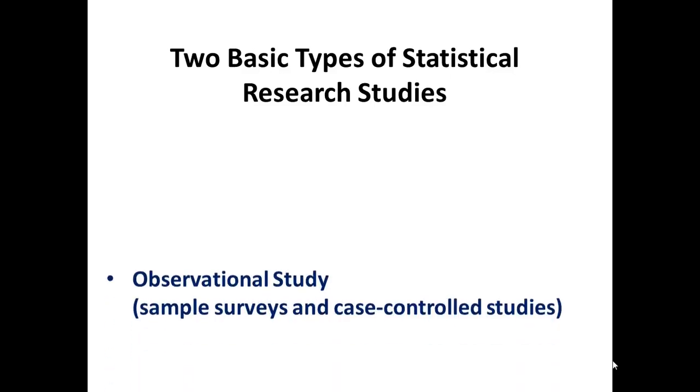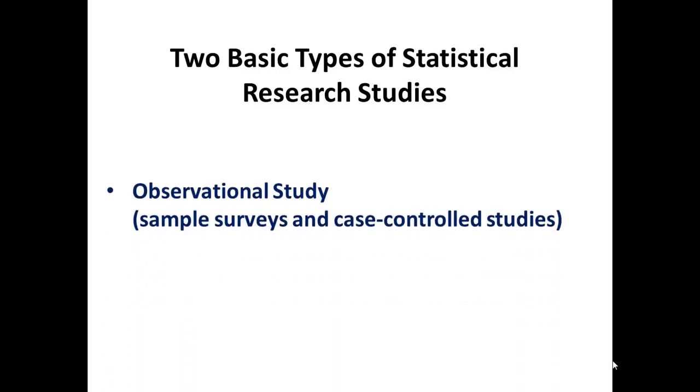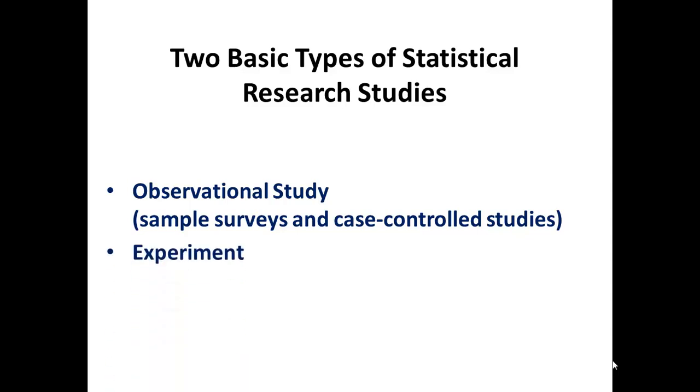There are two basic types of statistical research studies: an observational study, which includes sample surveys and case-controlled studies, and an experiment.